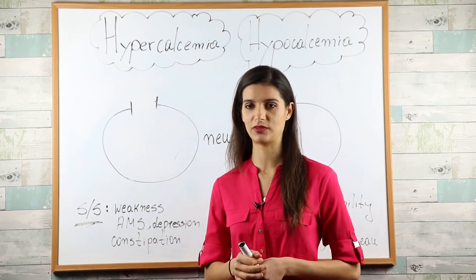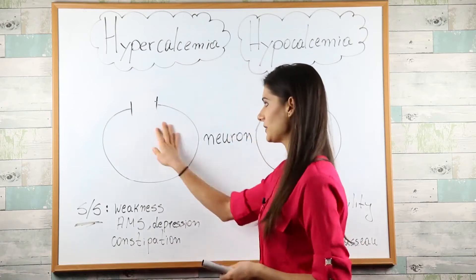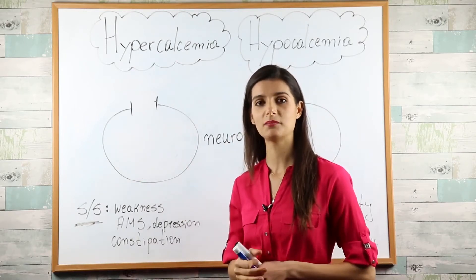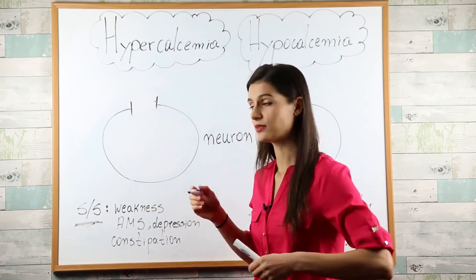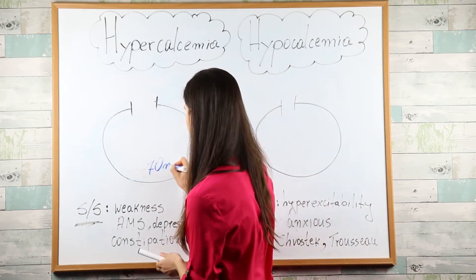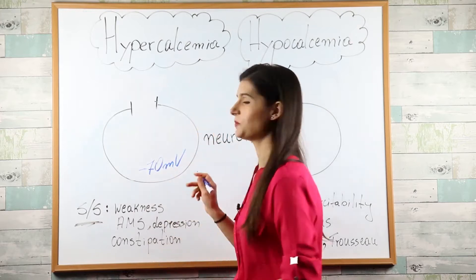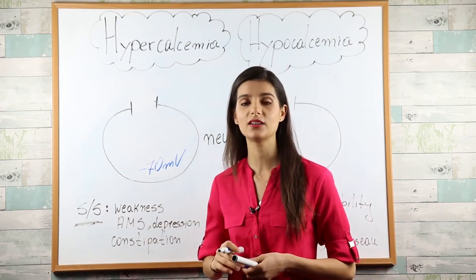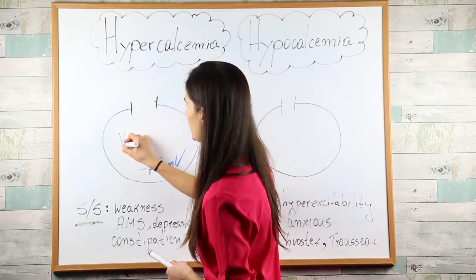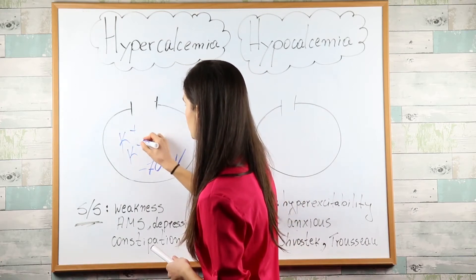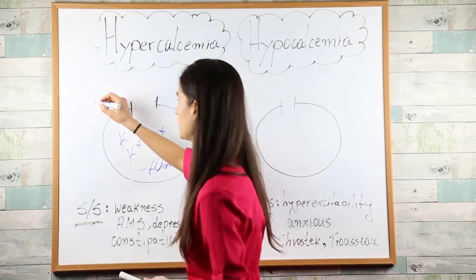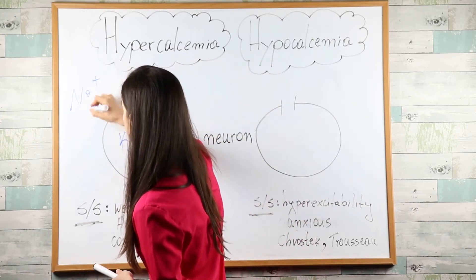So let's deal with hypercalcemia first. Imagine this is a neuron. Every cell has a resting membrane potential — for the neuron it's minus 70 mV. This potential is determined by the uneven distribution of ions, which means that inside the neuron we have relatively more potassium ions, and outside the neuron we have relatively more sodium ions.